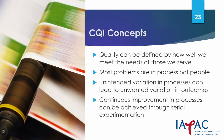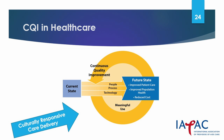Some CQI concepts: quality can be defined by how well we meet the needs of those we serve. Most problems are in fact in process and not caused by people. Unintended variation in process can lead to unwanted variation in outcomes. Continual improvement can be achieved through serial experimentation. Continuous quality improvement in healthcare seeks to examine the current state — in this case, culturally responsive care delivery — and how to use people, processes and technology such as medical records and SMS to achieve a future state of improved patient care and outcomes, improved population health and cost effectiveness.